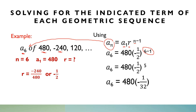So now we have 480 times negative 1 over 32. Next, we multiply: 480 times negative 1 is negative 480, divided by 32 is simply negative 15. So the value for a sub 6 is negative 15.